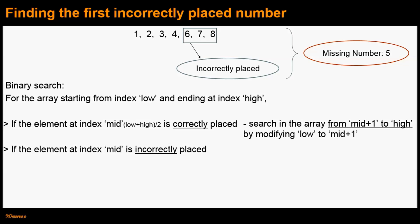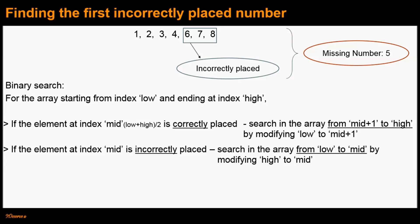If the element at index mid is incorrectly placed, then the first incorrectly placed number could either be the element at mid itself or somewhere to its left. Therefore we search in the left half including mid, from index low to index mid. We cannot exclude mid because it could itself be the first incorrectly placed number. We do this by modifying high to mid.